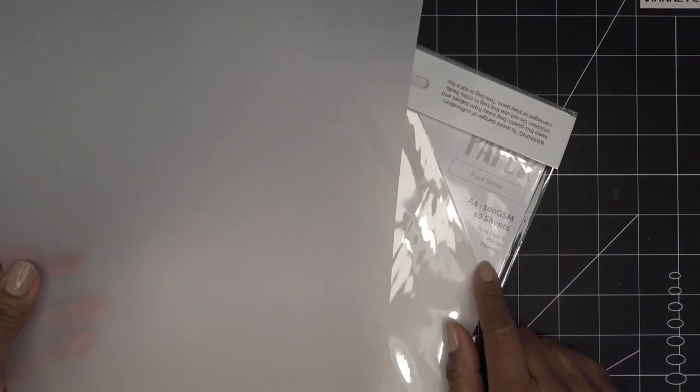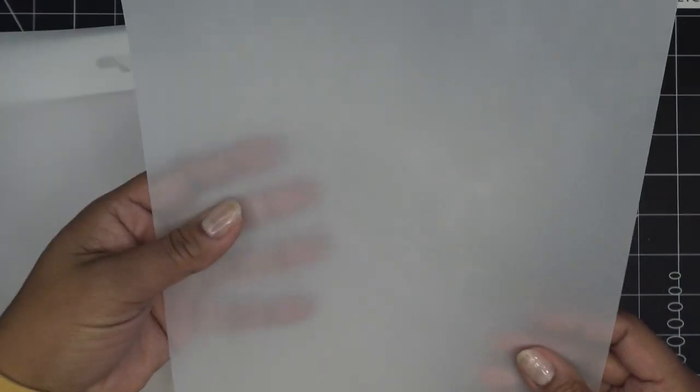This is the 100 GSM pure white. And it's very matte, where the other ones you can see that shimmer on it. Very matte. You can see my hand there. Again, typical vellum, I would say. Again, a little bit lighter in weight.